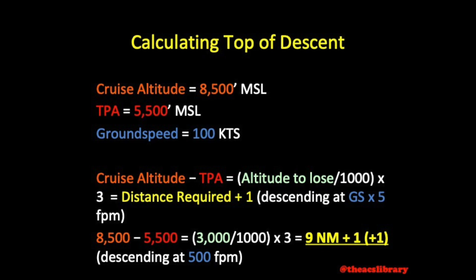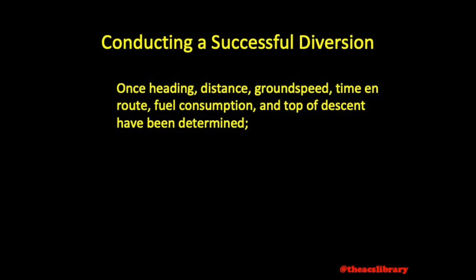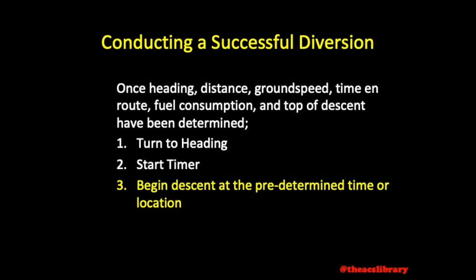We can determine this position based on pilotage if possible, or by using a VOR cross radial along our route to the diversion airport, beginning our descent as we pass over this checkpoint. This method is easy to do on the fly and involves very simple mental math. Once all of this is determined, all that's left to do is turn to your heading, start a timer, begin your descent at the predetermined time or location, and — assuming your calculations were correct — land the aircraft.